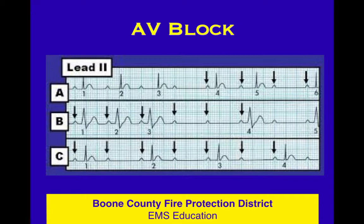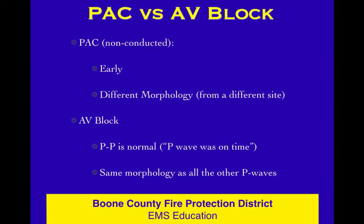None of those beats come in early. If they come in early, it's a PAC. But if they're all on time and we're dropping beats, now we're thinking we have an AV block — probably a second degree AV block, one of the flavors of that. We can't really tell without going deeper into this, but you want to march out the P waves. When you have an irregular rhythm, march out the P waves. See what the atria are doing.